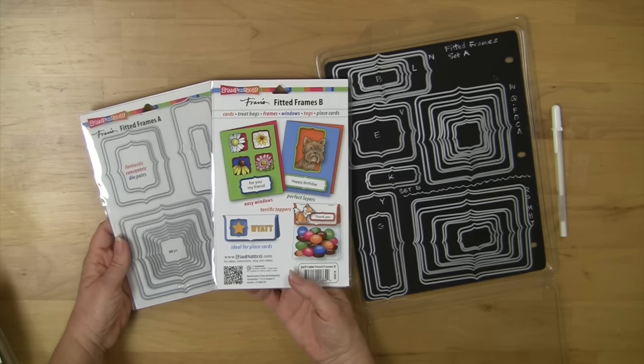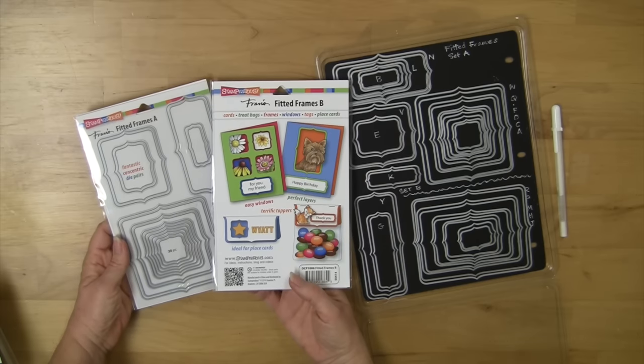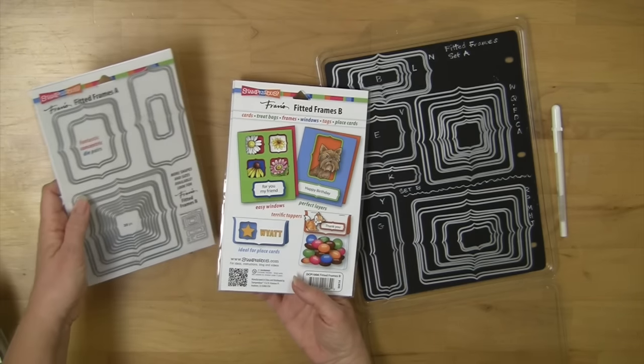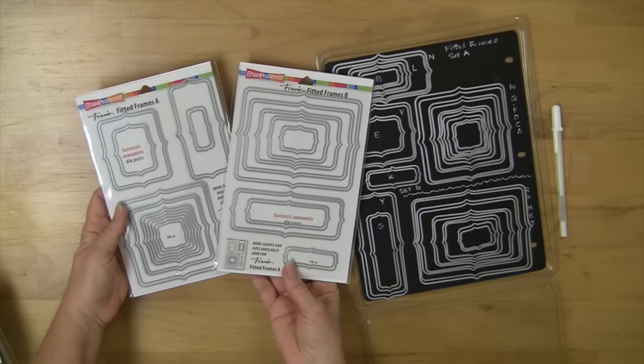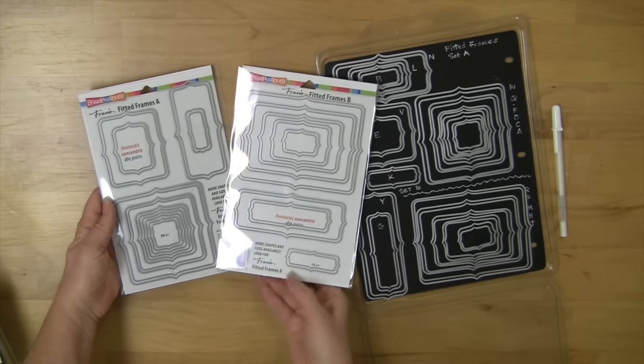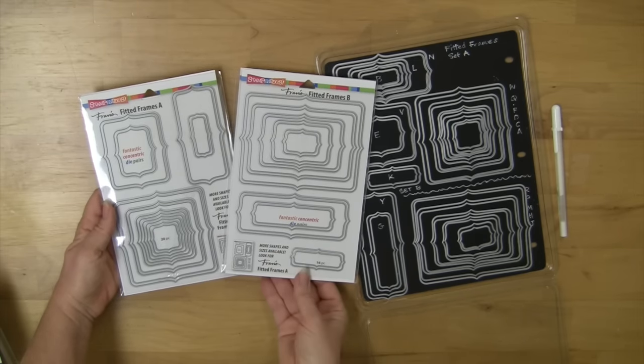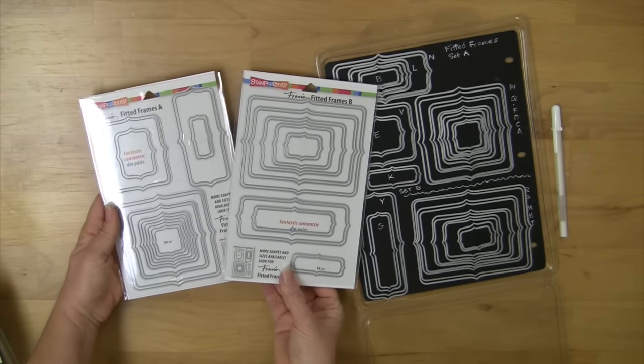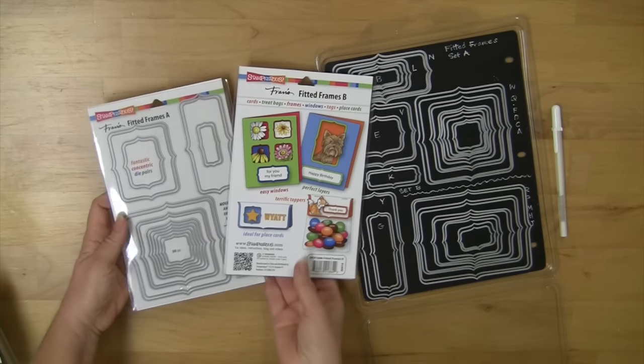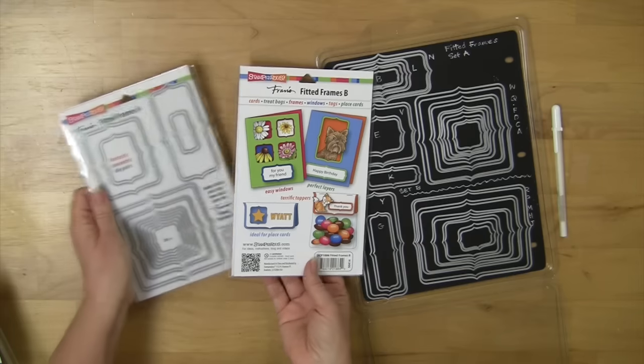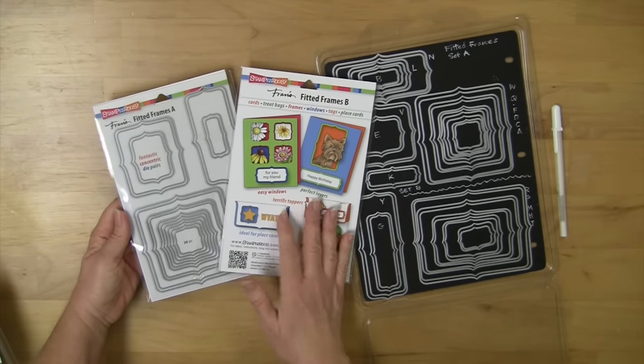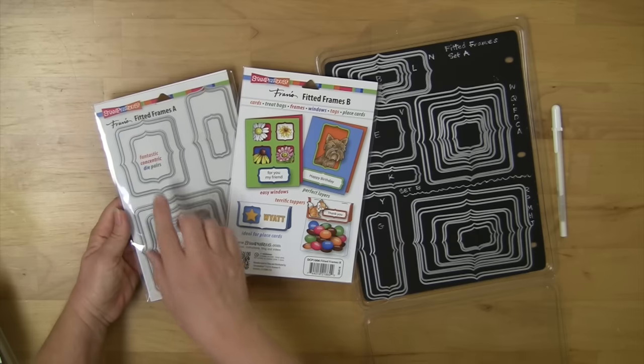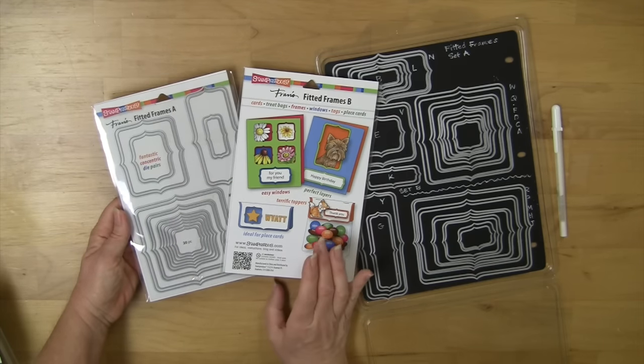I want to show you a few fun things about my fitted frames. There's an A package and a B package, and from this side you can see all of these concentric frames. They're all different sizes, and the back of each one has some ideas and a few things of how to use them. In the store you might see it with this side out or that one, but you want to see that there's an A and a B grouping.